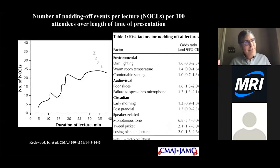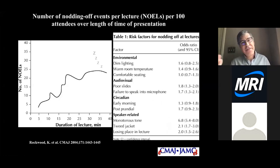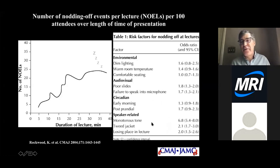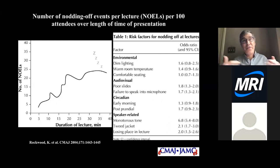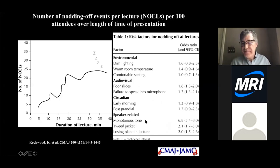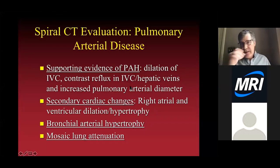A brief humorous interlude: a study from a Canadian medical journal measured 'nodding off events per lecture.' Risk factors included wearing a tweed jacket (odds ratio 2.1) and speaking in a monotone. In the era of web lectures, monotone is probably the biggest risk factor for audience nodding off.